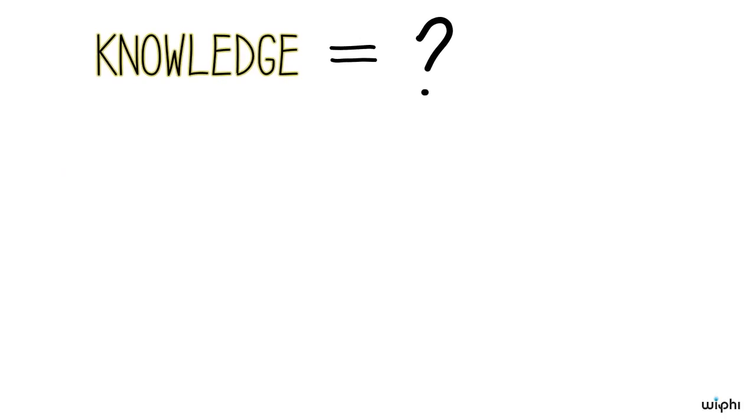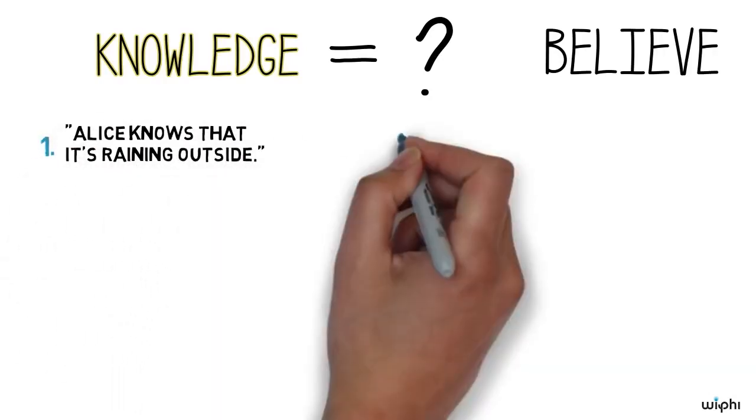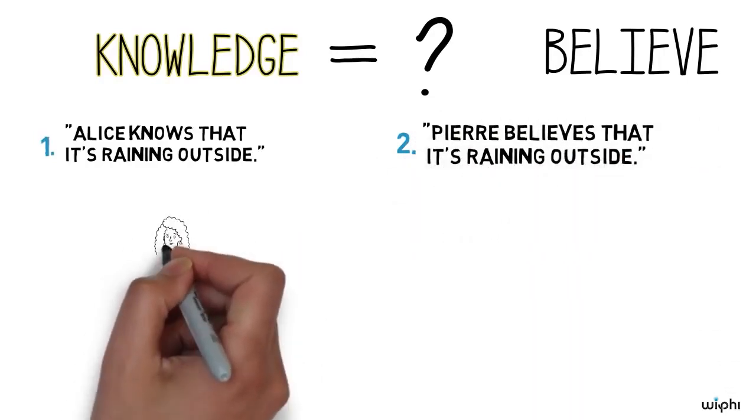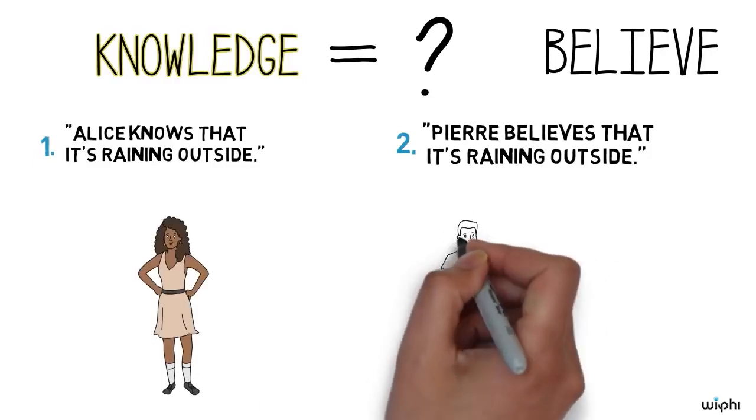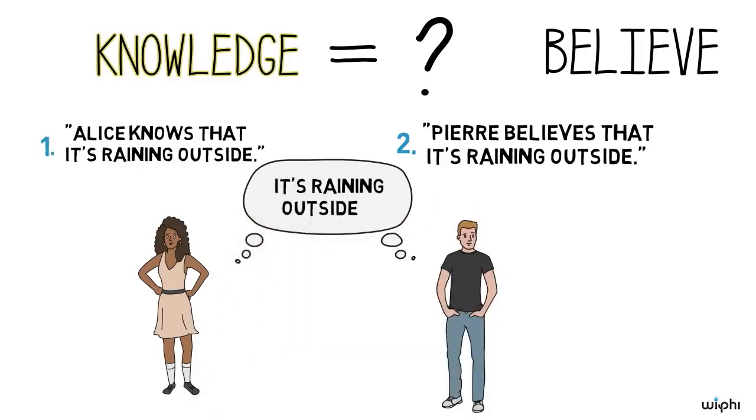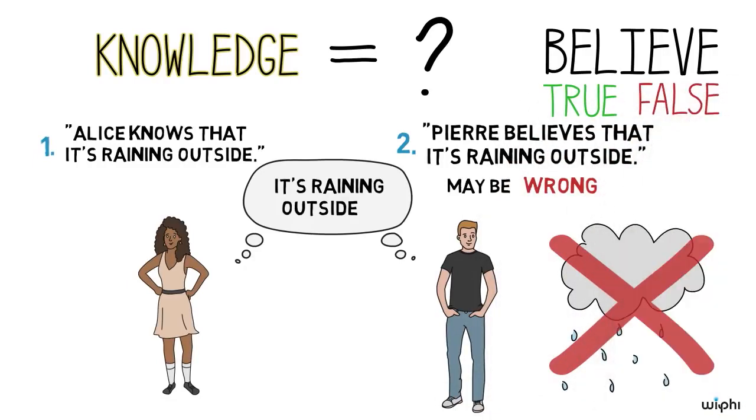It can help to compare knowing and just believing. Consider these two sentences. One, Alice knows that it's raining outside. Two, Pierre believes that it's raining outside. We instinctively feel some difference between Alice and Pierre. But what is it? Actually, we'll see there are several possible points of contrast here. The first and easiest has to do with truth. If Pierre just believes that it's raining outside where he is, maybe he's wrong. Maybe the rain has stopped and he's fooled by the sound of water dripping from the trees. The things we believe are sometimes true and sometimes false.